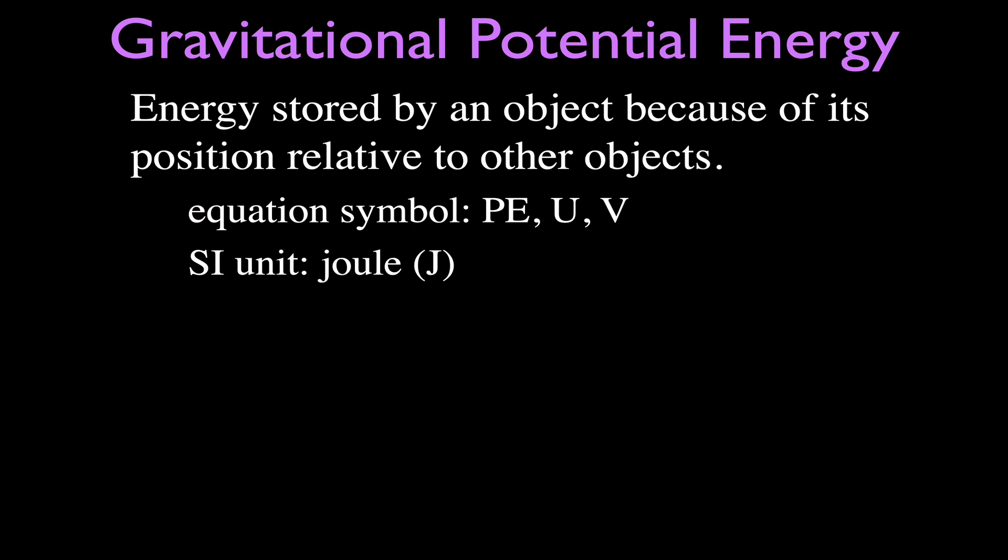The SI unit, the metric unit, the international unit for gravitational potential energy is the joule, named after James Prescott Joule. Remember, the joule is the unit for energy and work. So if you have kinetic energy, potential energy, or work, they all have the unit of the joule.